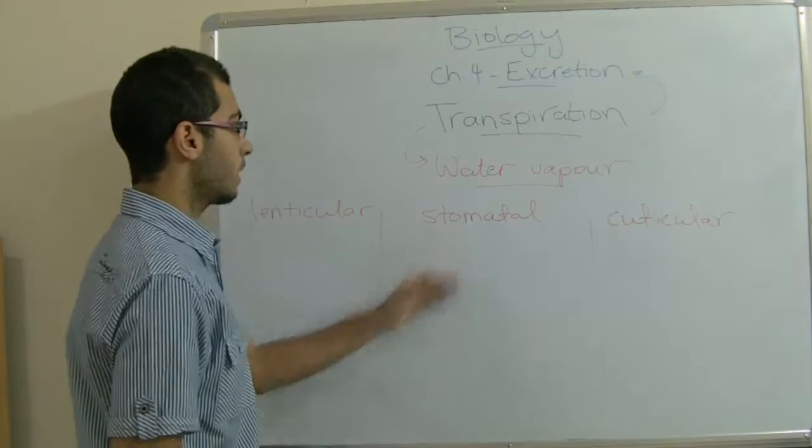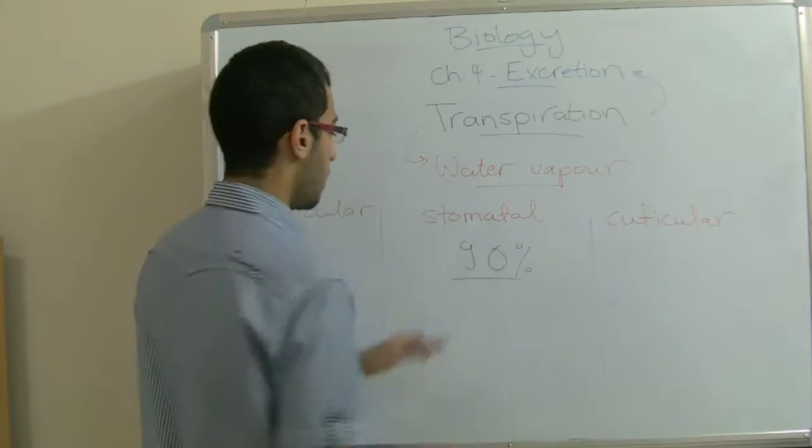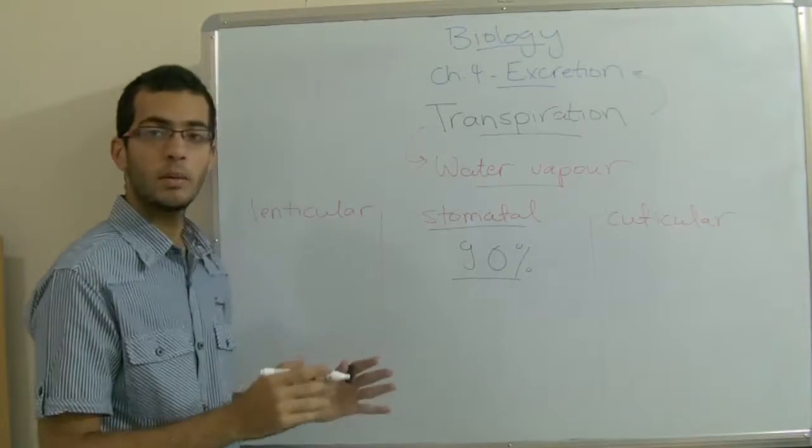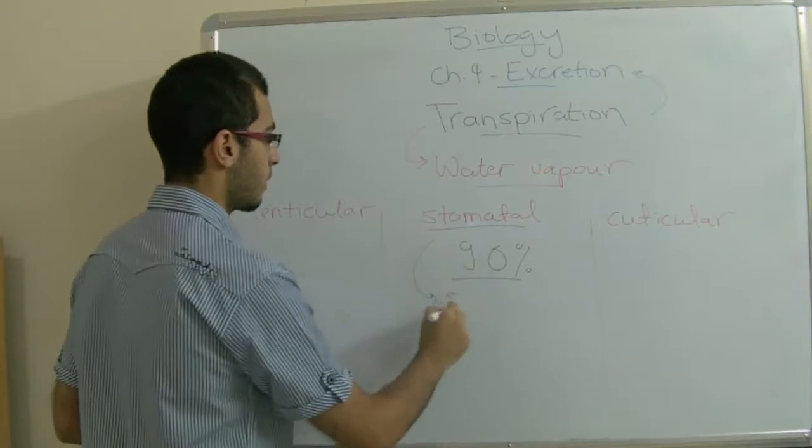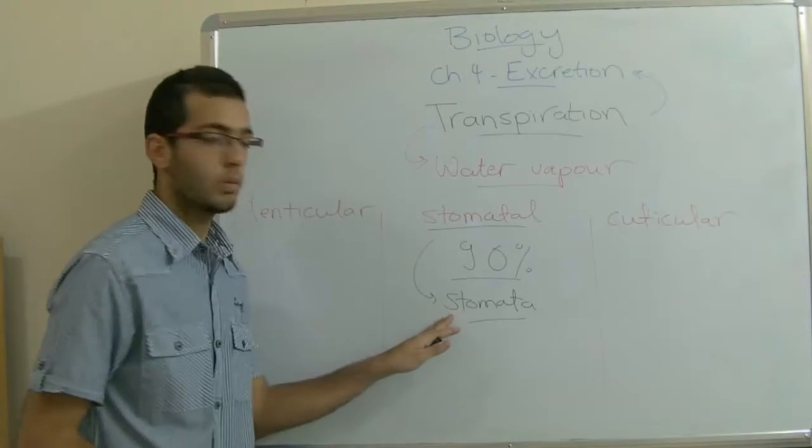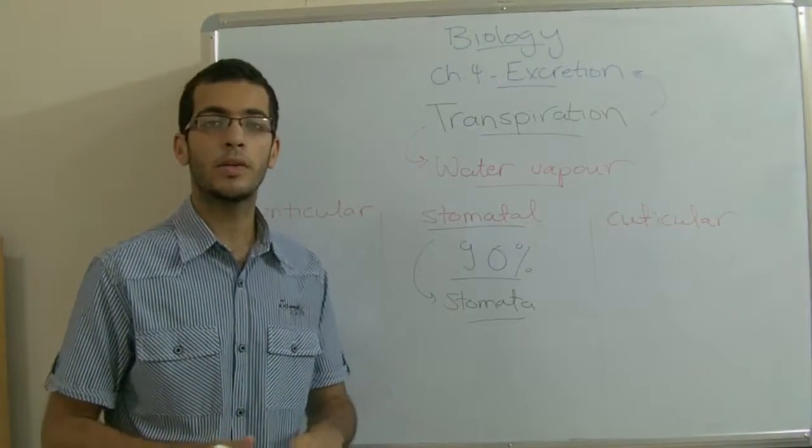Stomatal transpiration represents 90% of the transpired water of the plant. Stomatal transpiration means that the water vapor is excreted through the stomata. And the stomata are the openings which are found mainly in the leaves and they are also found in the green stems.